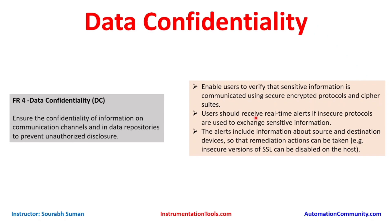Users should receive real-time alerts if insecure protocols are used to exchange sensitive information. For example, if a file classified as confidential is being shared without encryption — whether inside or outside the plant — a system should analyze what type of data the user is sharing. If the user is defying the policy that all sensitive information must be sent using a secure encrypted protocol, a real-time alert should be raised and sent to the relevant stakeholders.